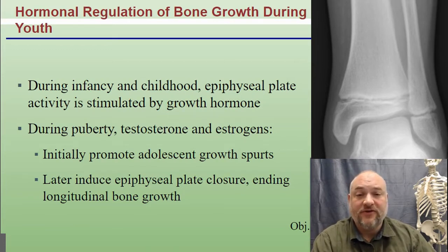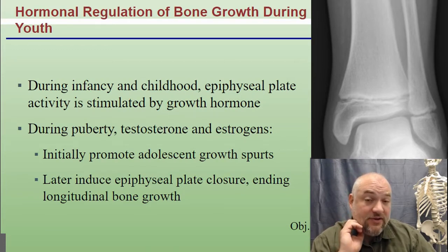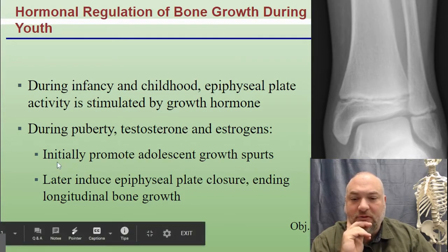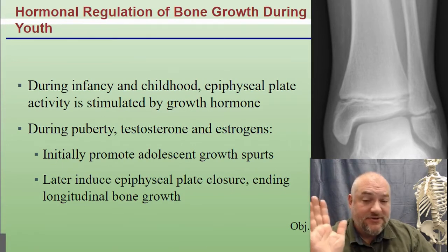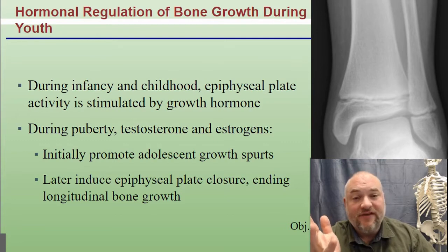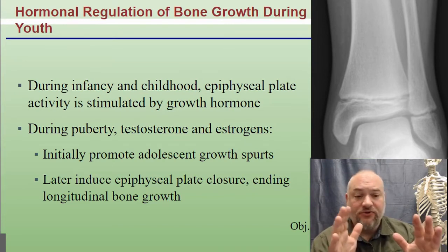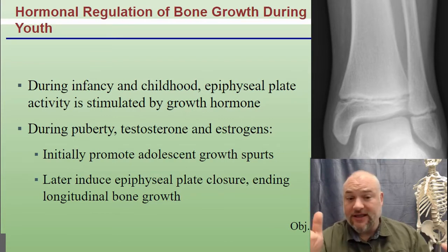During puberty and adolescence, testosterone and estrogen take over as we start developing secondary sexual characteristics. Initially, these hormones promote adolescent growth spurts as levels rise, but eventually, as those levels continue to change, they induce the end of epiphyseal growth — plate closure — which means your bones will no longer grow longer and you won't get any taller.